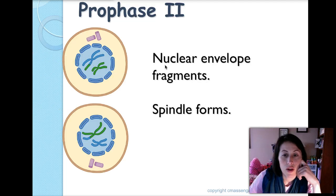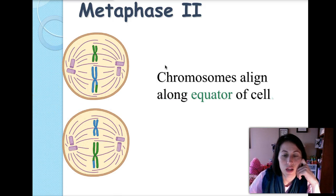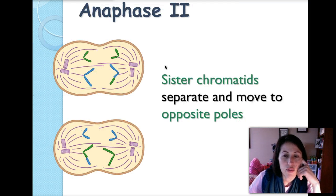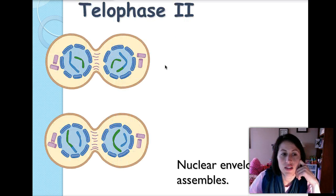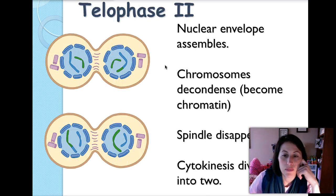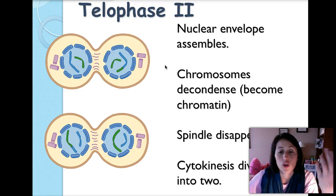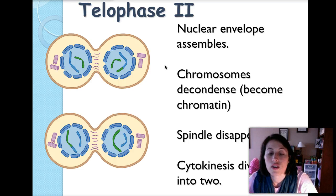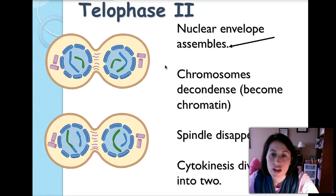In prophase two the nuclear envelope disappears again and spindle fibers form. In metaphase two chromosomes align across the equator of the cell. In anaphase two the sister chromatids separate and move towards opposite poles. In telophase two the nuclear envelope reassembles, chromosomes decondense back to chromatin, spindle fibers disappear, and cytokinesis occurs so each of those cells is divided into two.